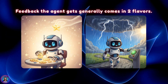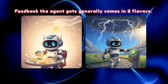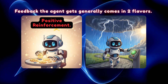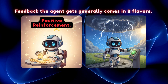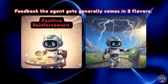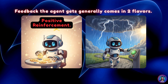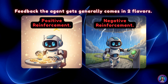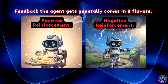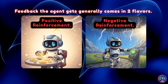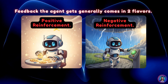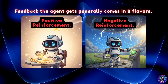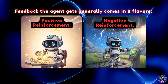The feedback an agent gets generally comes in two main flavors. You've got positive reinforcement — like giving it a treat for doing a good job — which allows the agent to maximize its performance. Then there's negative reinforcement, which is more about avoiding something bad like a penalty, making sure the agent learns to meet at least a minimum standard.